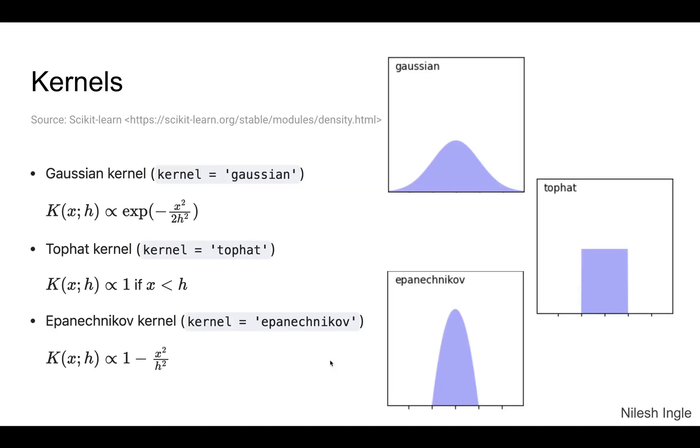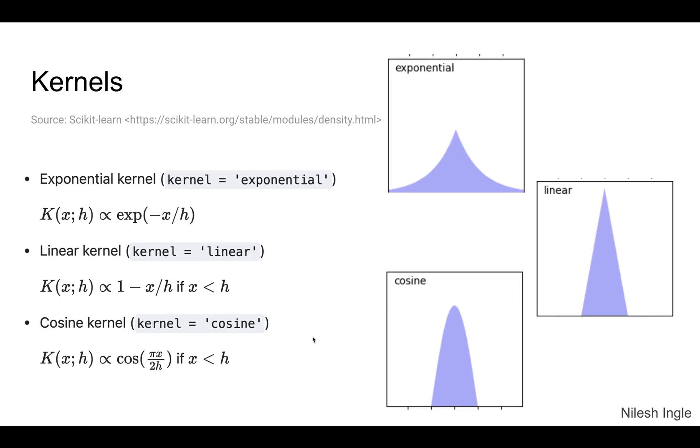Overall, there are these types of kernels that we can use to estimate density using scikit-learn methods. We have the Gaussian kernel, which is given by this relation, the tophat kernel, and then the Epanechnikov, linear, and cosine kernels shown here.